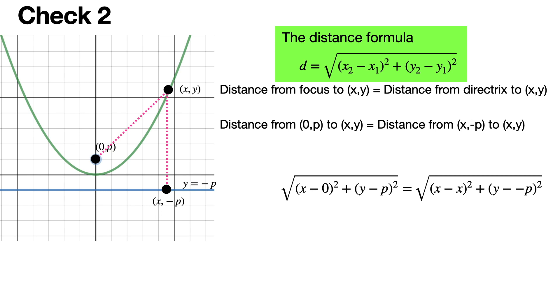If you carefully use the distance formula and plug in your points, that's really all there is to this. The other part is that the point on the directrix is x negative p. The x value is x, and because it's on the line y equals negative p, the y value is negative p. So you very carefully plug in your points.